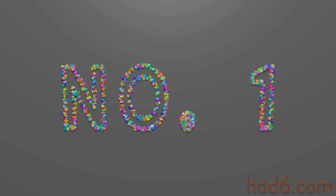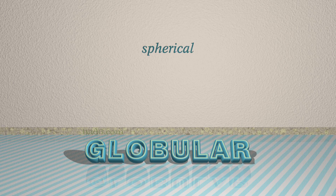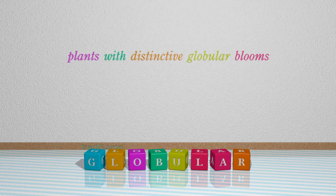Number 1: Globular, which means spherical. For example: Plants with distinctive globular blooms.